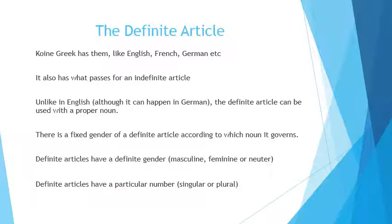Koine Greek also has what passes for an indefinite article — 'a' or 'an.' So it's not really that complicated. Koine Greek, and for that matter classical Greek, don't strictly have an indefinite article, but they have something very similar. And what they use, we don't see very much.